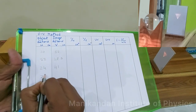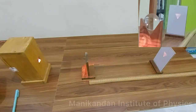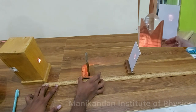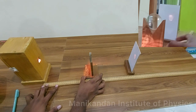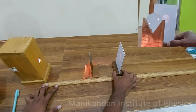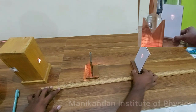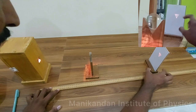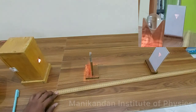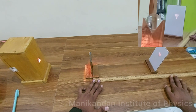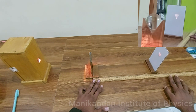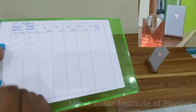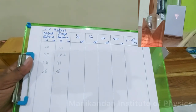For the next case, I set the object distance to u = 26 centimeters, changing it from 24 to 26, and then move the screen away from the lens. A clear image forms on the screen and measuring the distance gives approximately v = 36 centimeters.